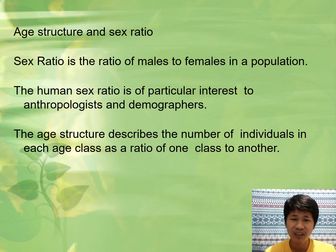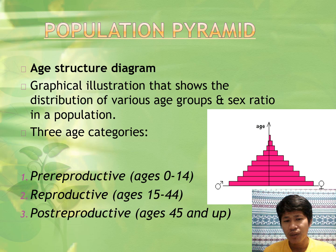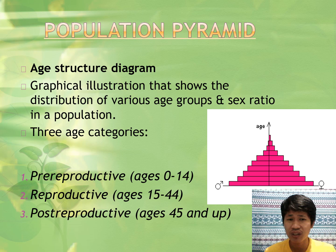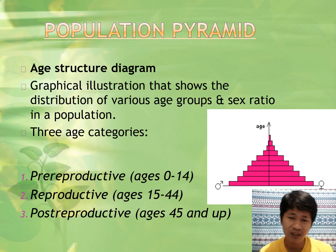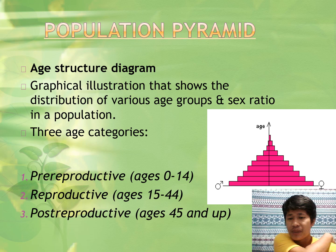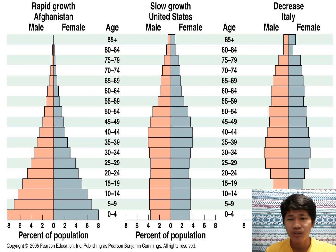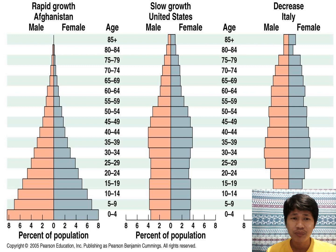In terms of visual representation, the best tool is the age structure diagram — a graphical illustration that shows the distribution of various age groups and sex ratio in a population. This is commonly used for human population studies, though ecologists may also do surveys for other animals. The three common age categories are: 0 to 14, 15 to 44, and 45 and up. Looking at a comparison of three countries — Afghanistan, United States, and Italy — each has a different growth pyramid. Afghanistan shows rapid growth, meaning every year there are more births than the previous year — the population is growing rapidly.